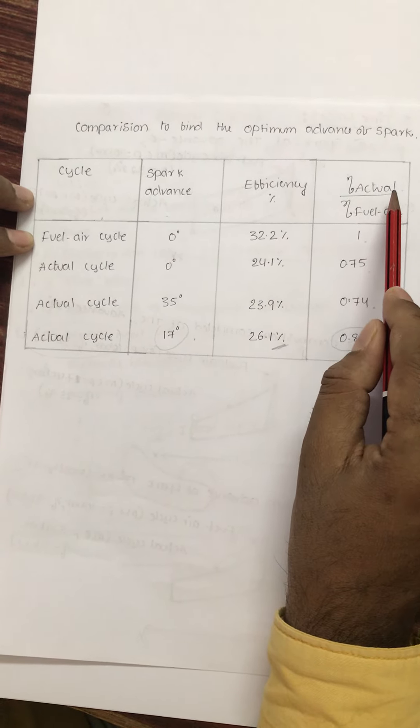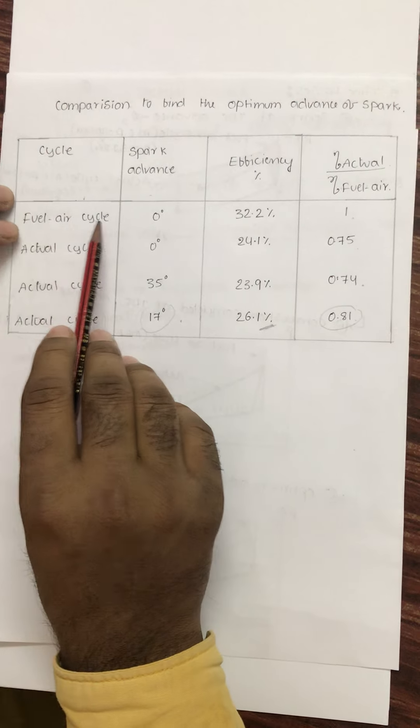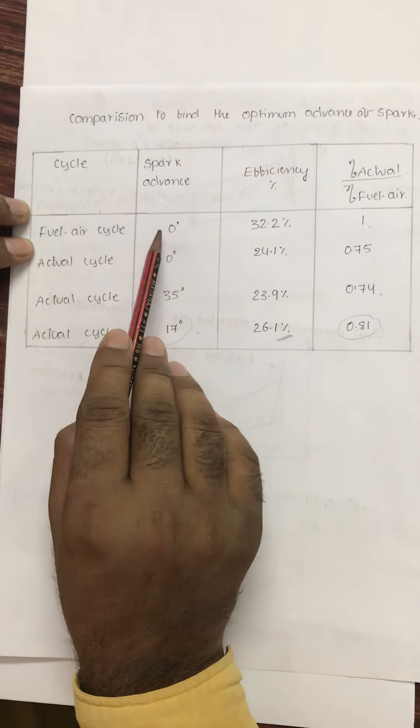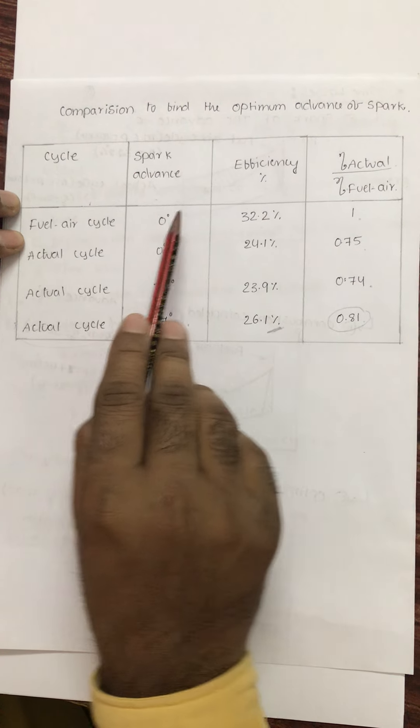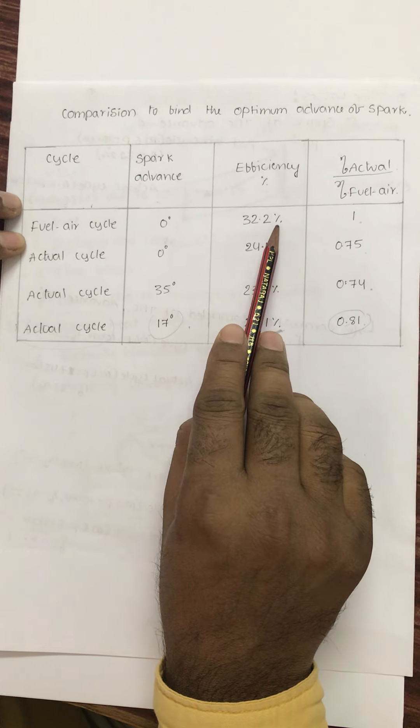So the ratio should be as high as possible. For the fuel-air cycle, if I give the spark advancement - fuel-air cycle means zero degrees spark, theoretical cycle, zero degrees - you'll get 32.2% maximum efficiency.